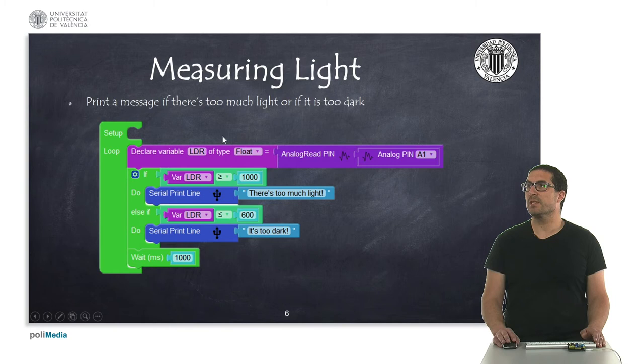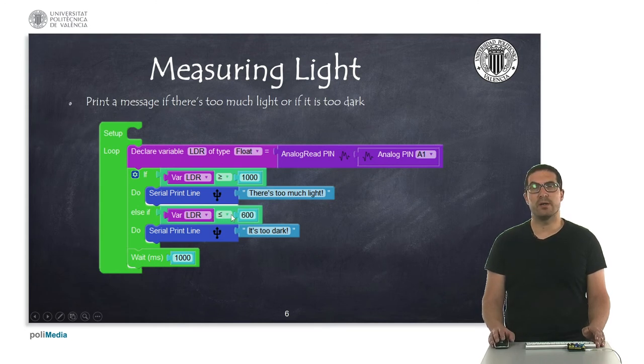Let's move to the example. In the first example, we are just simply measuring the light. We are just simply reading the analog pin, and if the value is higher than 1000, then we say there's too much light, and if the value is below 600, then we say it's too dark. And this is just simply the first example.